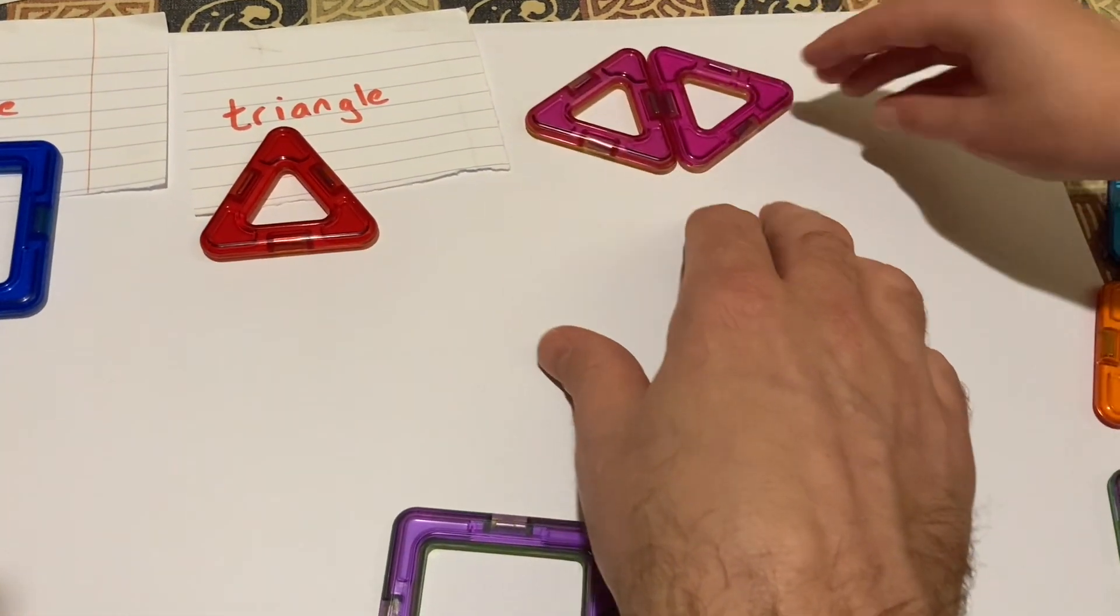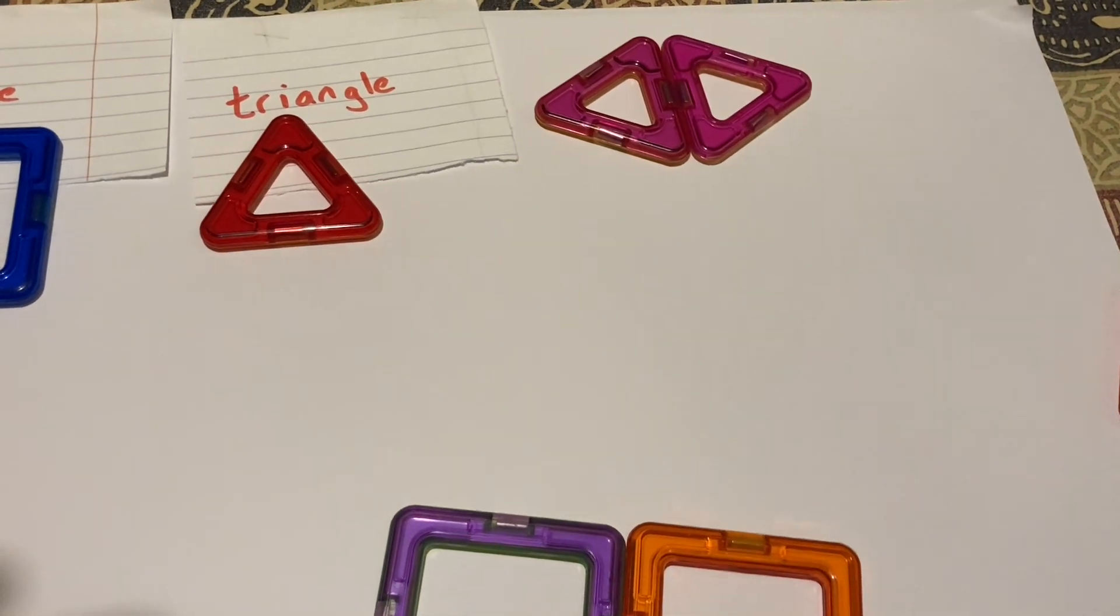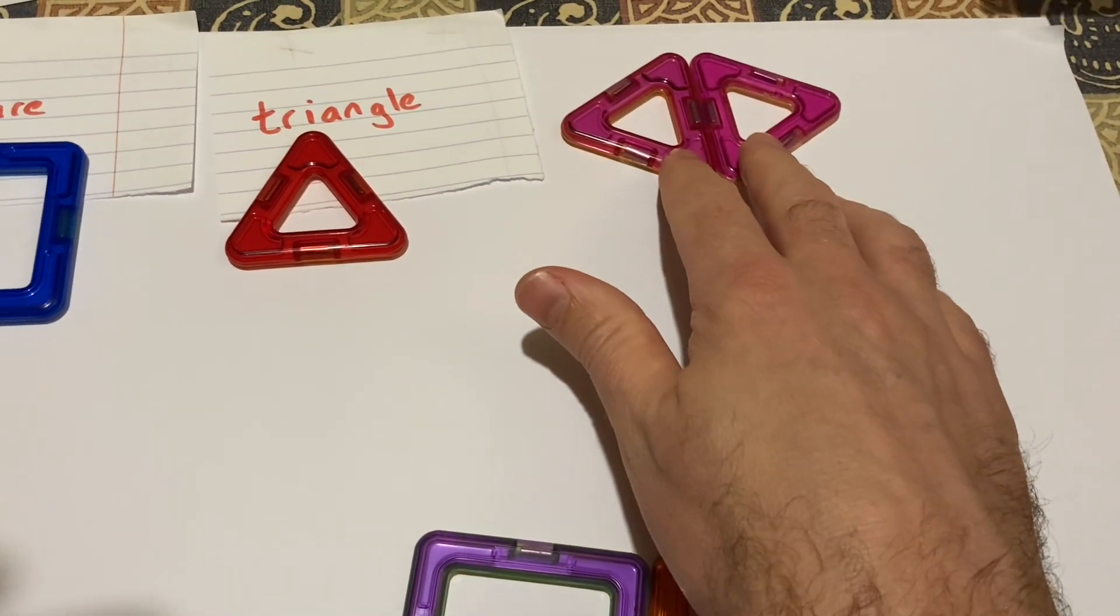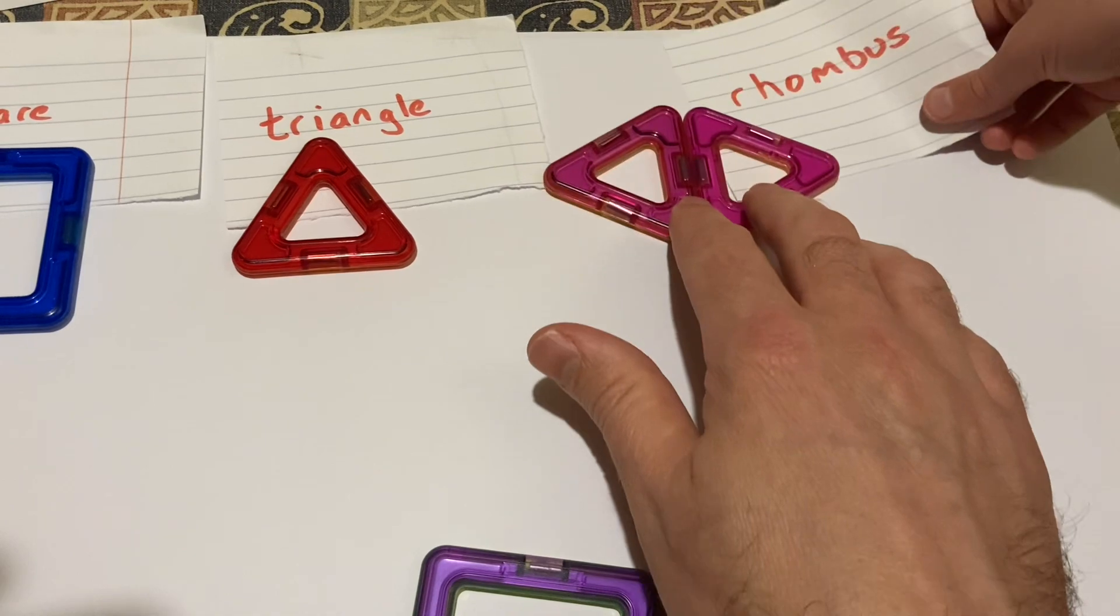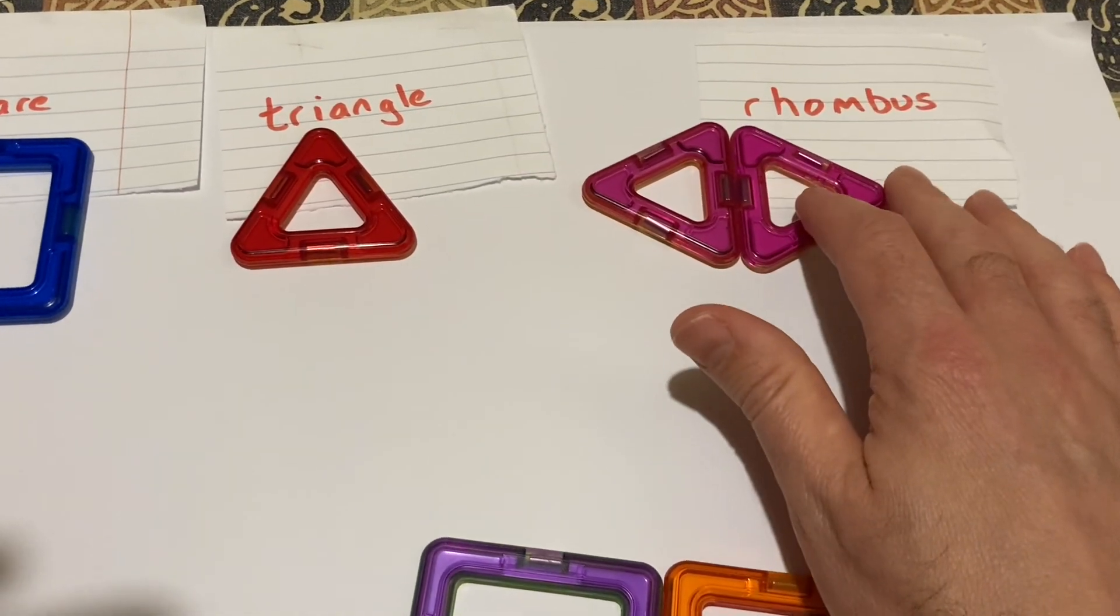So we've got... or primary would call it a diamond. Yeah, so when you see some kids' books or primary school, you might see it called a diamond, but definitely in secondary you'd call it a rhombus.